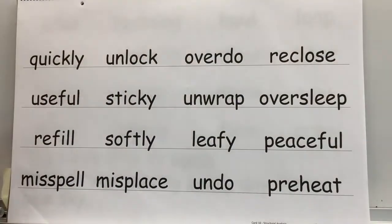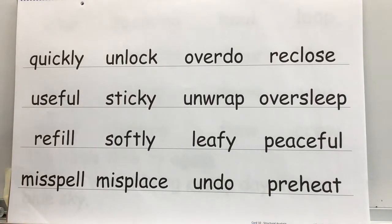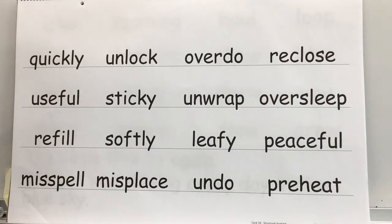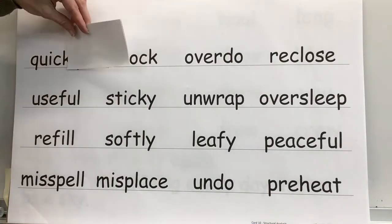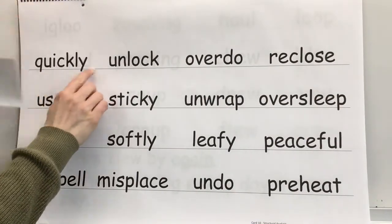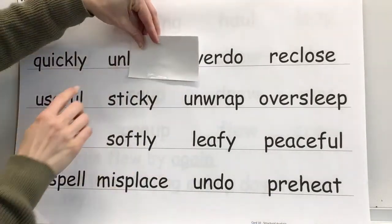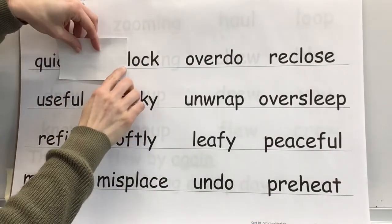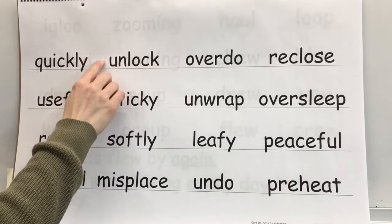Today we are going to read words with affixes first, then we'll do our word reading chart. If you remember from yesterday, we learned that an affix is prefixes and suffixes belonging to that group — it's kind of a different term for prefix and suffix. Get ready. Base word: quick. Affix: ly. Whole word: quickly. Affix: un. Base word: lock. Whole word: unlock.